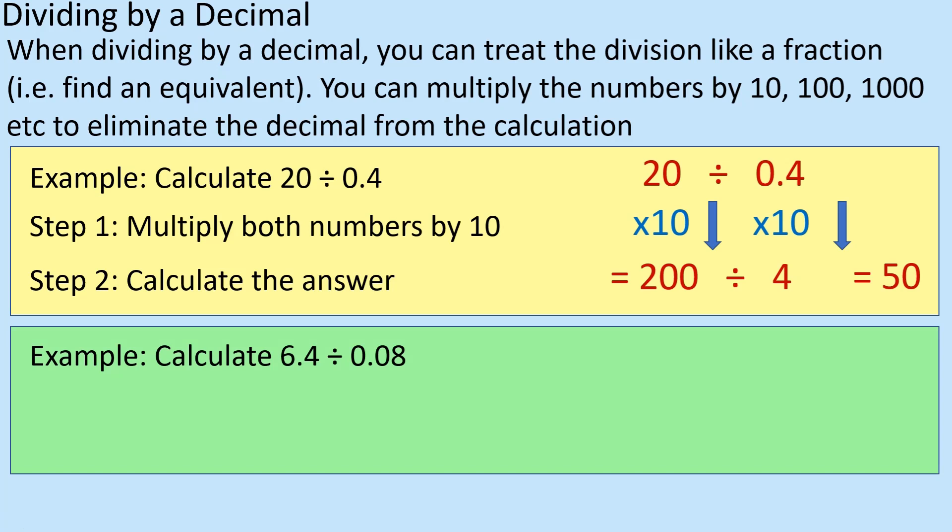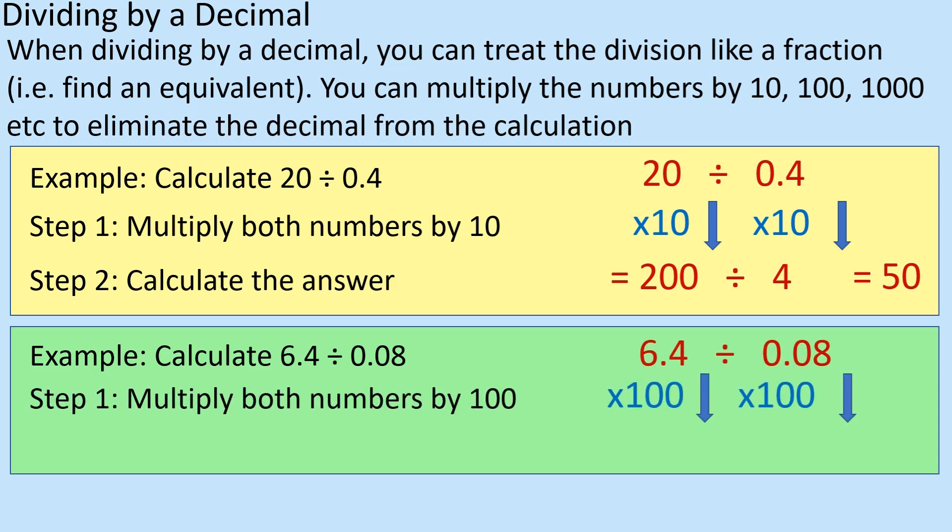So if I did 6.4 divided by 0.08, well if I times them both by 100, that's going to get rid of the 0.08. Times them both by 100, so it's going to give me 640 divided by 8, which is going to give me 80 as an answer.